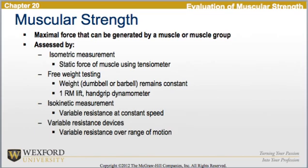Looking at muscular strength, we define it as the maximal force that can be generated by a muscle or muscle group. It is assessed by isometric measurement — the static force of a muscle using a tensometer. We can also use free weight testing, where a dumbbell or barbell weight remains constant and we look at a one-rep max lift or a hand-grip dynamometer. There is also isokinetic measurement, with variable resistance at a constant speed, and variable resistance devices with variable resistance over a range of motion.